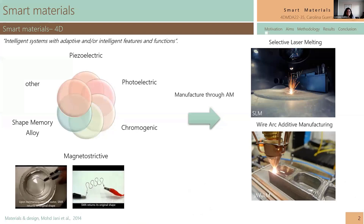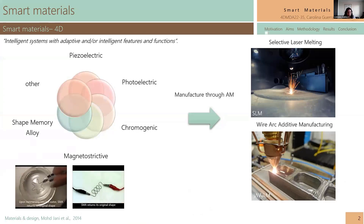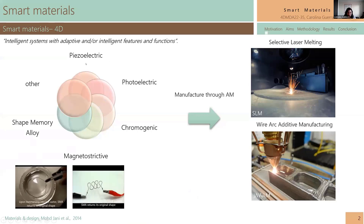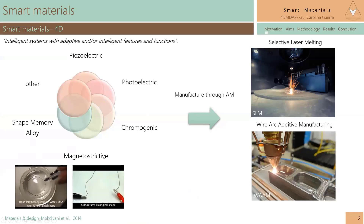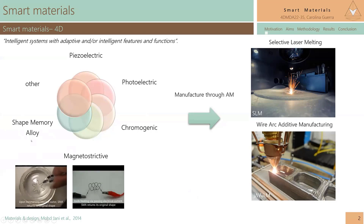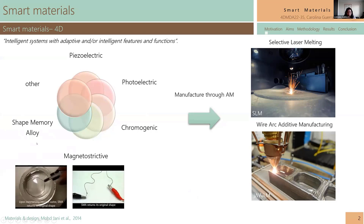As you know, there are different kinds of smart materials. Among them, there are piezoelectric, photoelectric, and magneto-restrictive materials. And today, I'm going to talk about shape memory alloys.